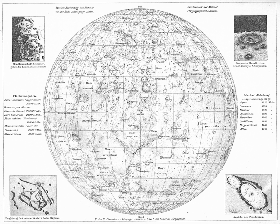Since the invention of the telescope, astronomers have given names to the surface features they have discerned, especially on the Moon and Mars. To standardize planetary nomenclature, the International Astronomical Union was assigned in 1919 the task of selecting official names for features on solar system bodies.